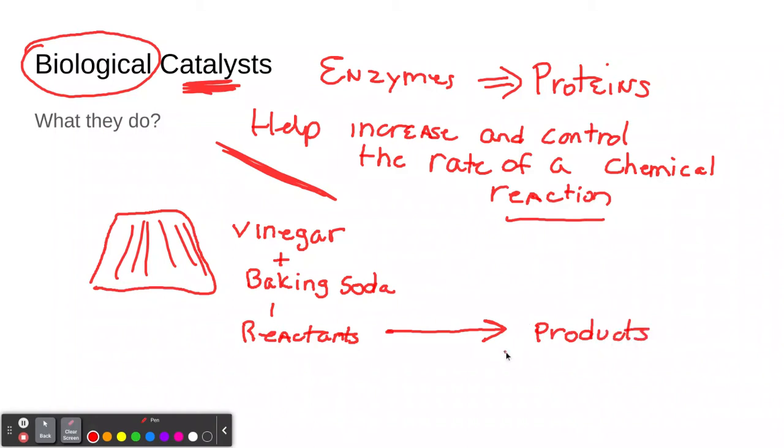So in this case, they're going to yield carbon dioxide and water and sodium acetate. Of course, when you saw this in school, all you cared about was this volcano coming out, especially if you put some food dye in. So let's look at enzymes, how that works.